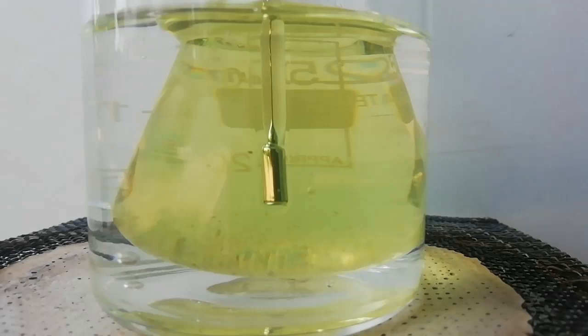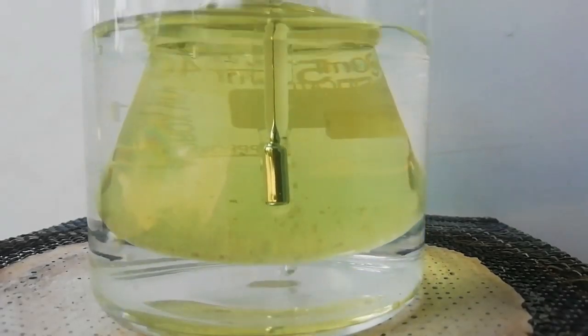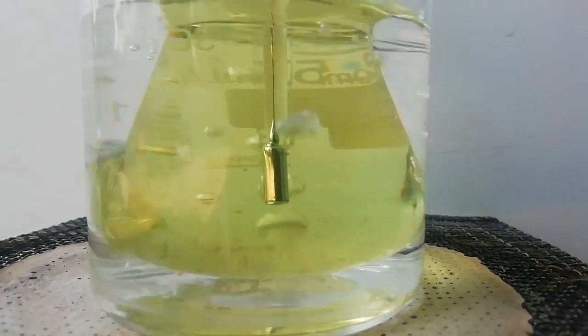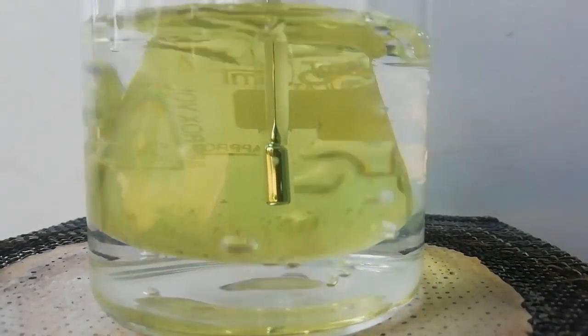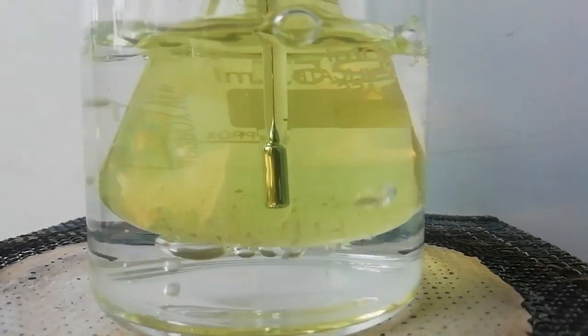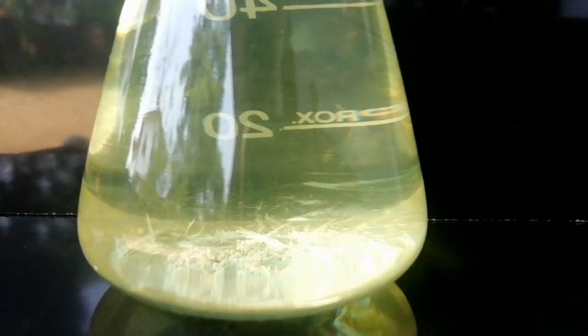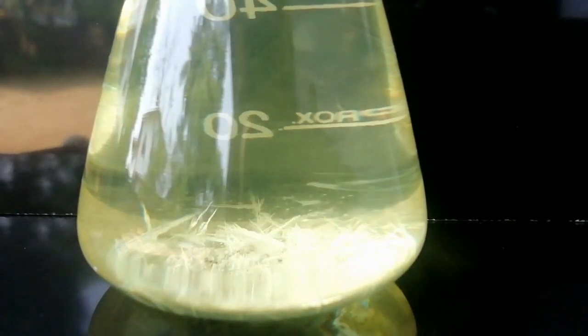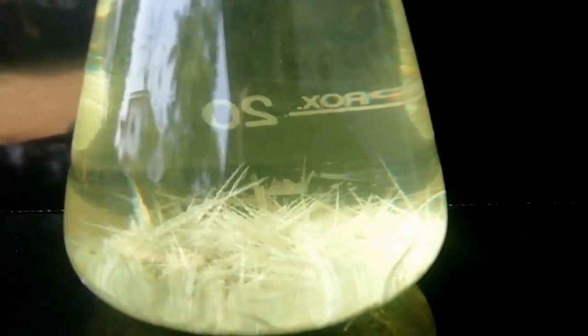The flask is heated in a water bath, and the sulfur begins to dissolve. When the mixture reaches 95 degrees Celsius, the sulfur is completely dissolved. The mixture is left to cool, and upon reaching 55 degrees Celsius, yellow needle crystals of sulfur are created.